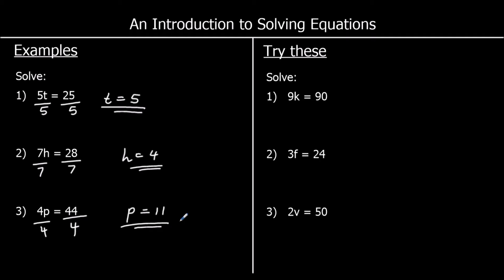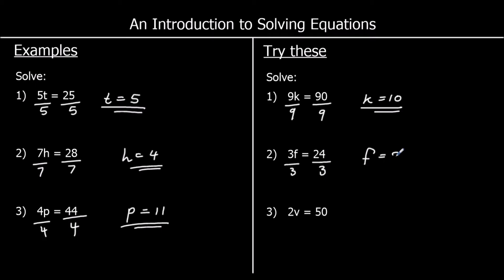3 for you to try, so have a go at these now. Question 1: 9k equals 90. To get k by itself, divide both sides by 9. So k equals 10. Question 2: 3f equals 24. To get f by itself, divide both sides by 3. So f equals 24 over 3, which is 8. And question 3: 2v equals 50. To get v by itself, divide both sides by 2. 50 over 2 is 25, so v equals 25.